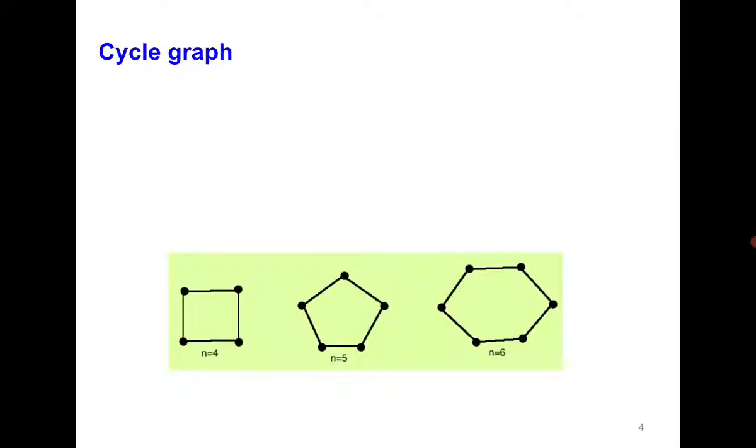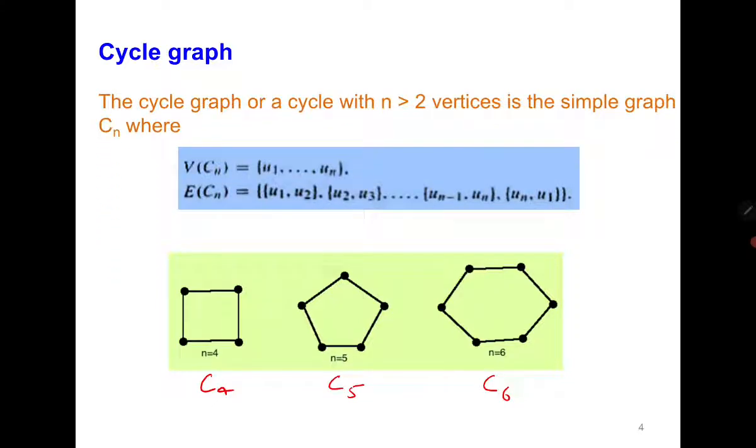Now cycle of length 4 C4, cycle of length 5 C5, cycle of length 6 C6. The cycle graph is a simple graph where vertices are u1, u2, un and edges are u1, u2 same like the path graph with an extra edge u1, un reaching back to the same vertex. This is how we define the cycle graph. Sometimes we simply call it a cycle.